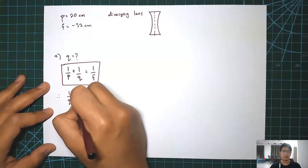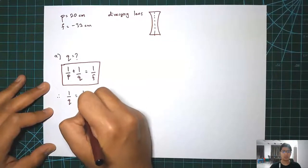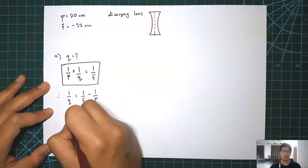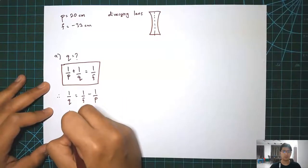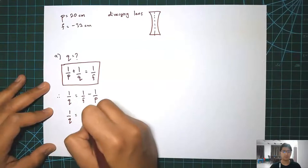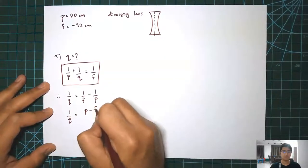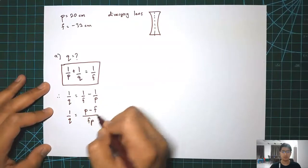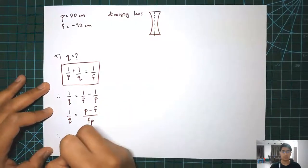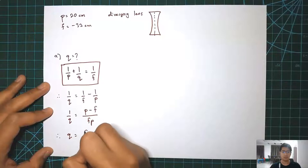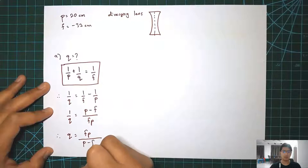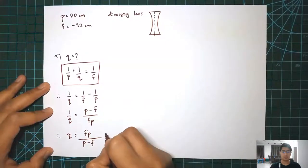Which is 1 over P plus 1 over Q equals 1 over F. You need to remember this equation. Then you need to rearrange the equation to get the Q. Just be careful with the algebra. You need to carefully derive the equation. So that here Q equals F P over P minus F.